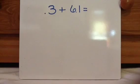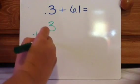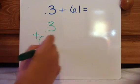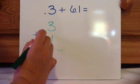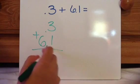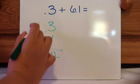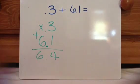Okay, let's go over this example. 0.3 plus 6.1. Same thing. Decimal, decimal, decimal. 3 plus 1 is 4. Nothing plus 6 equals 6.4.